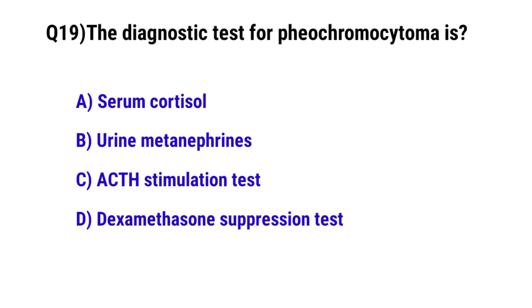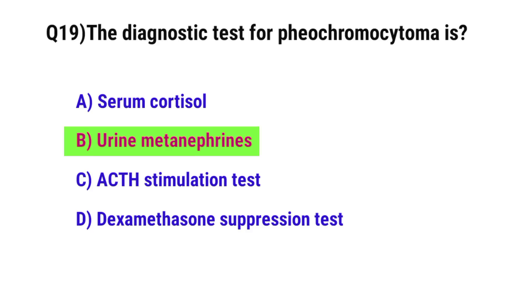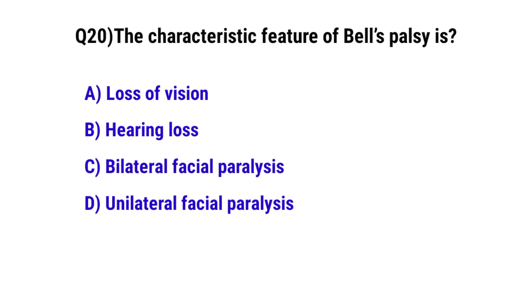Question No. 19: The diagnostic test for pheochromocytoma is — the correct option is B: urine metanephrines.